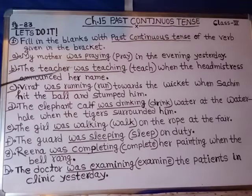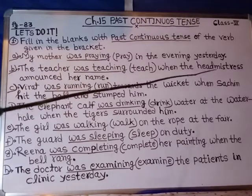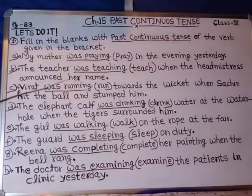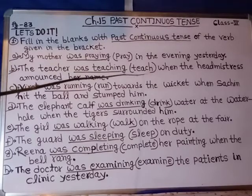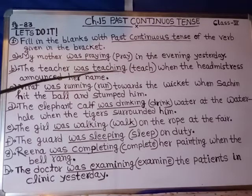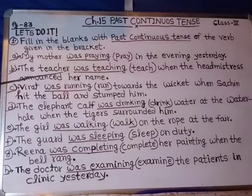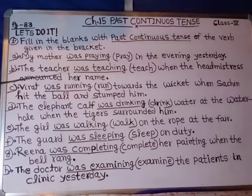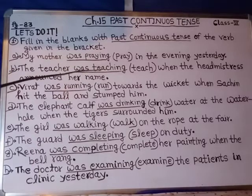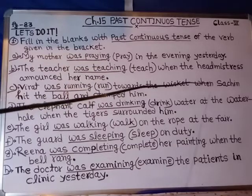B: The teacher was teaching when the headmistress announced her name. With the verb 'teach' we added ing, and the helping verb 'was' is used because we are talking about only one teacher, which is singular. So the answer is: was teaching.